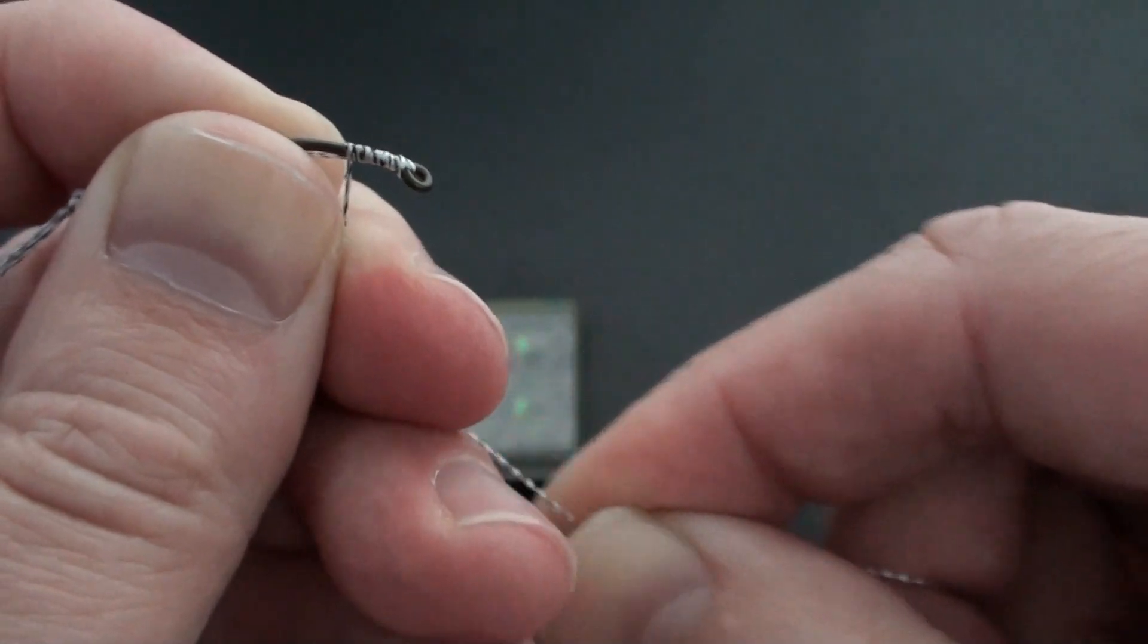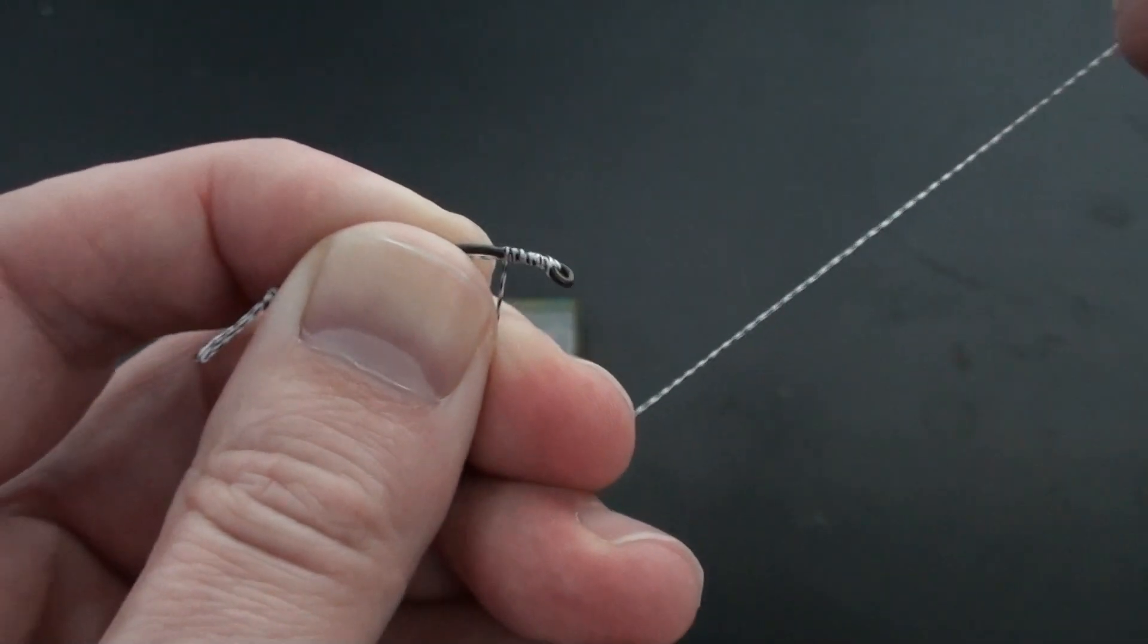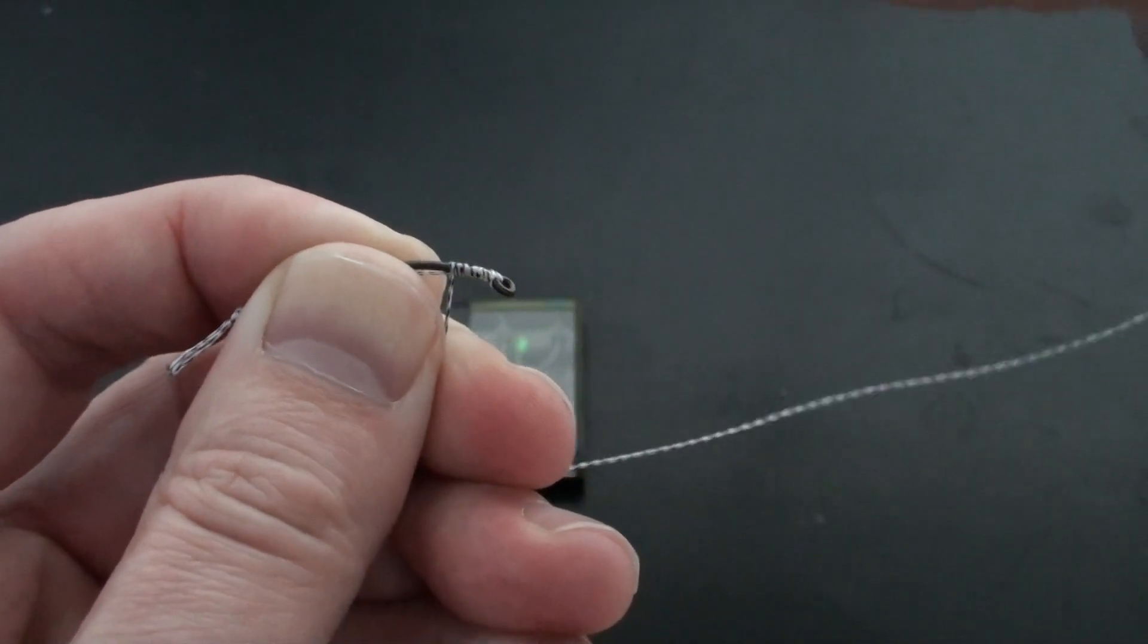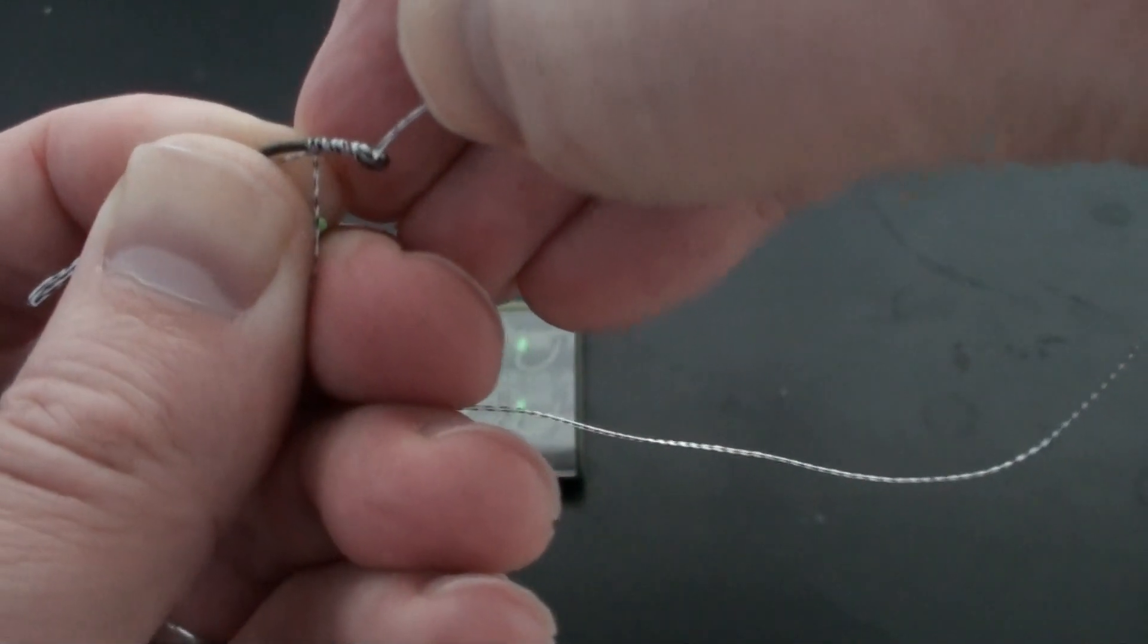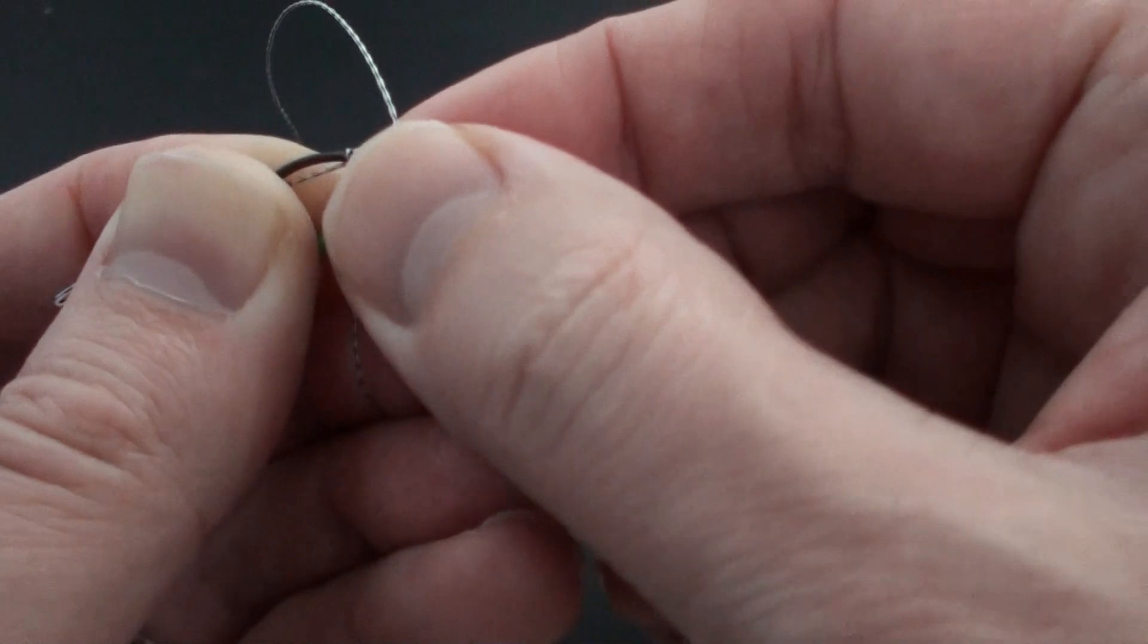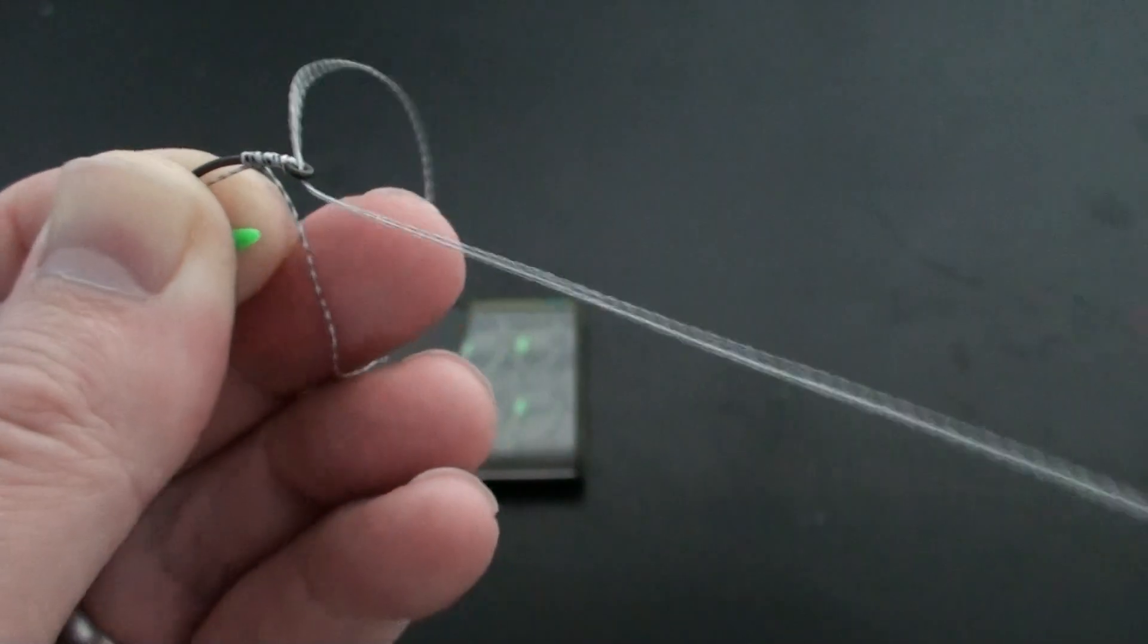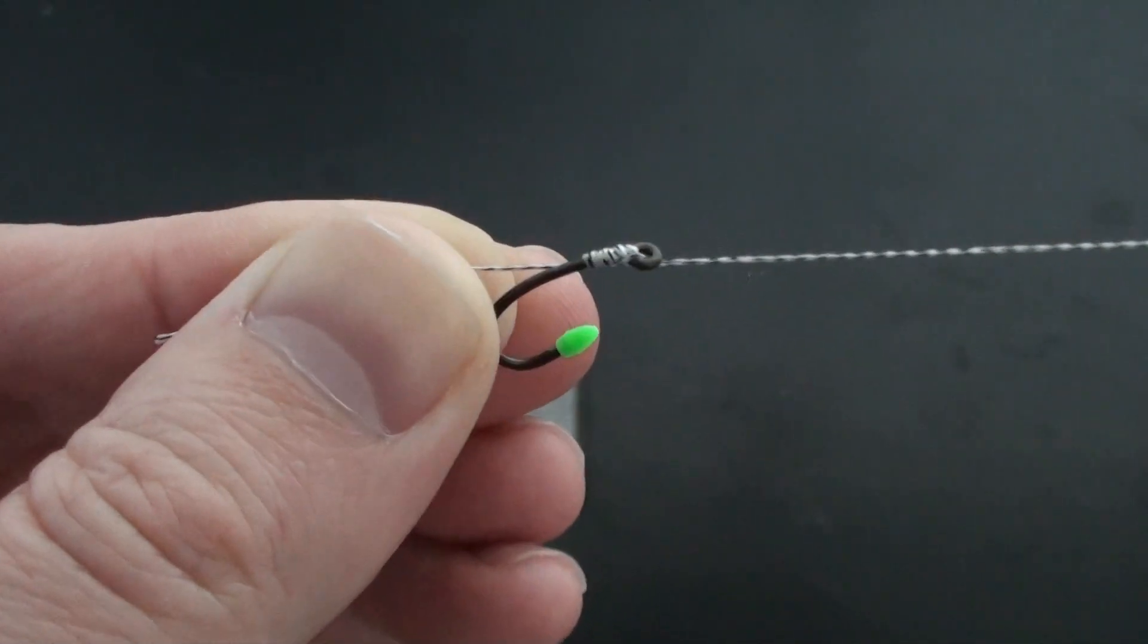So once we have done that, the next thing we do is take the end of the hook length material and we then make sure that we pass the end through the eye towards the hook like that. Pull it nice and tight. And there you go.